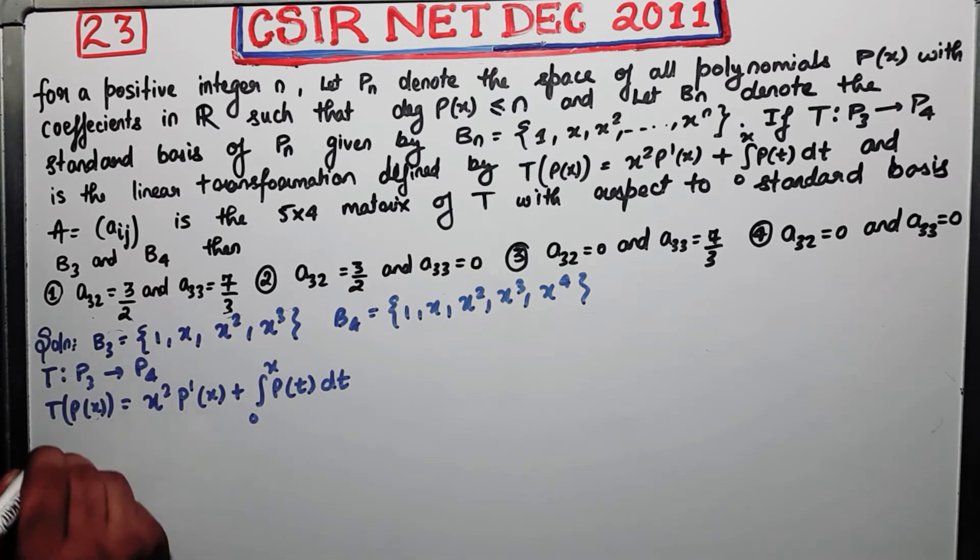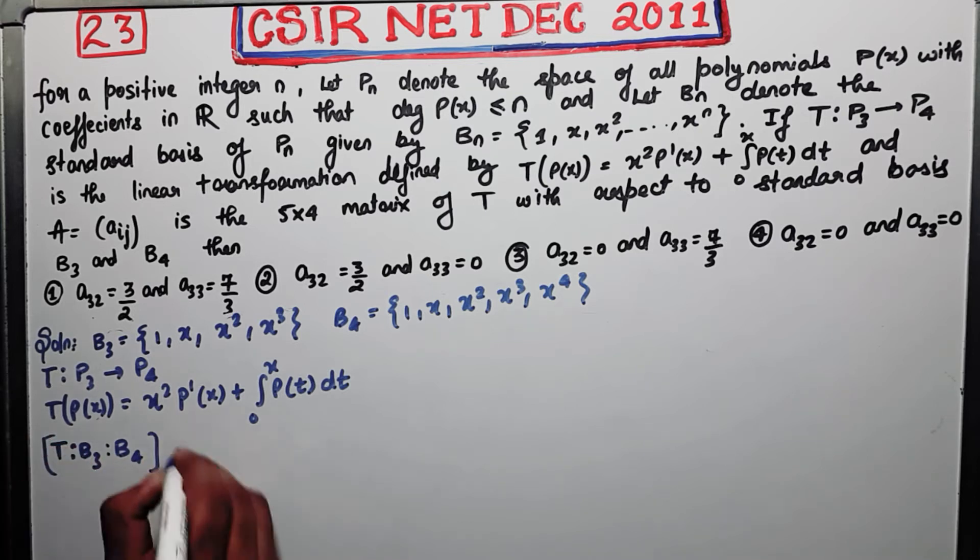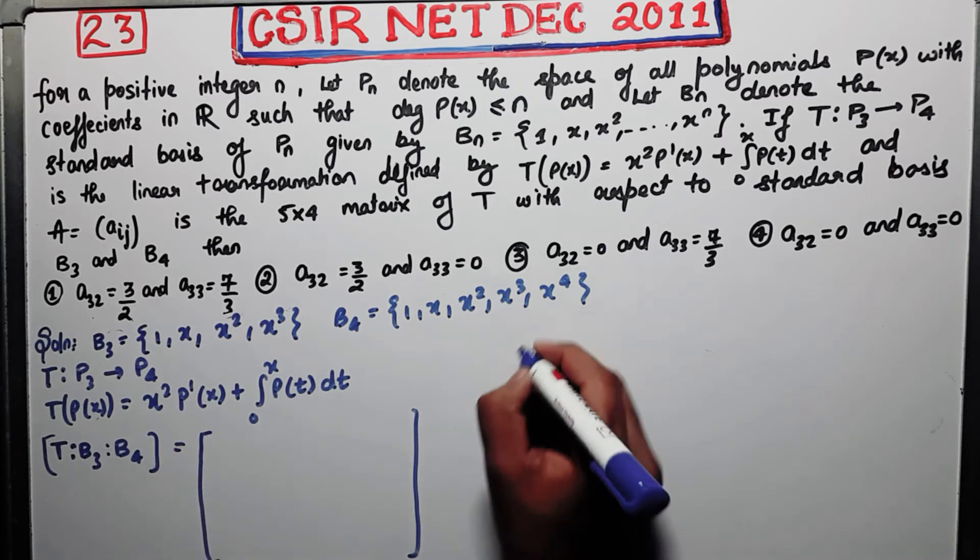Now what you have to do, you have to construct a matrix of T with respect to B_3 and B_4. This is what you have to do. So it's a 5 cross 4 matrix. So firstly think over it, how the entry will be calculated.